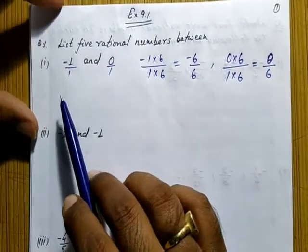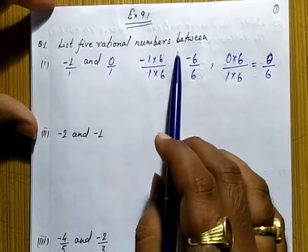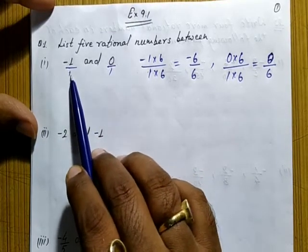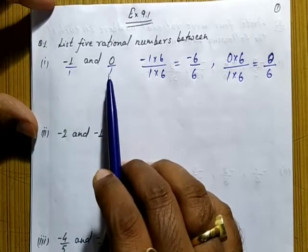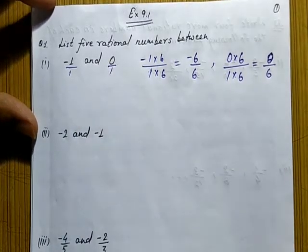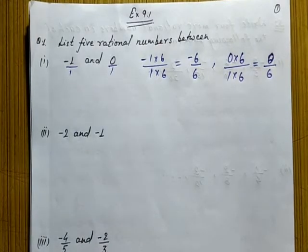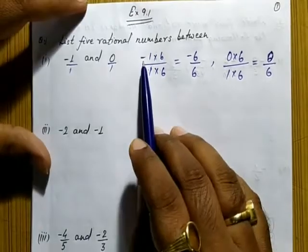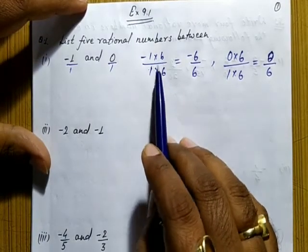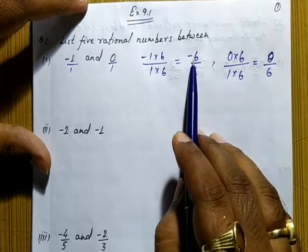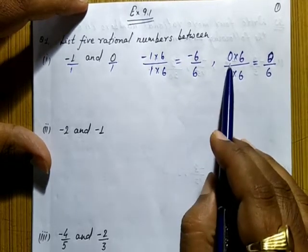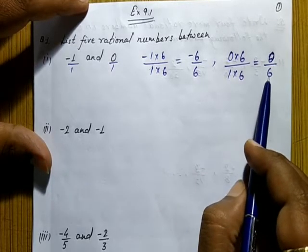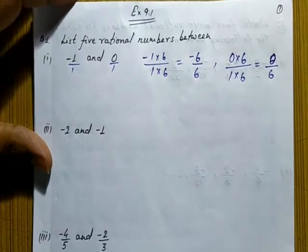Exercise 9.1, question number one: list five rational numbers between minus one and zero. Minus one can be written as minus one upon one, and zero is written as zero upon one. Here we make the denominator six because we have to find five rational numbers. Now minus one into six upon one into six becomes minus six upon six, and zero into six upon one into six becomes zero upon six.